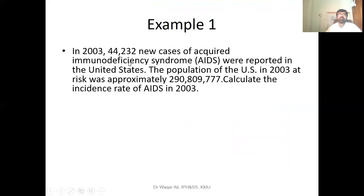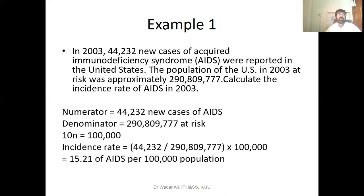In 2003, 44,232 new cases of AIDS were reported in the United States. The U.S. population at risk in 2003 was approximately a given magnitude. To calculate the incidence rate of AIDS in 2003, this is a simple cumulative incidence: the numerator is all the cases and the denominator is the total population at risk. The incidence rate becomes 15.21 cases of AIDS per 100,000 population.